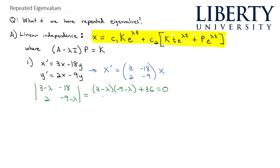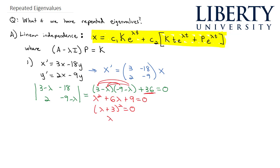Solving this equation gives us our eigenvalues. Expanding: lambda squared, then 9 lambda minus 3 lambda gives positive 6 lambda, and negative 27 plus 36 is positive 9, so lambda squared plus 6 lambda plus 9 equals zero. That factors to (lambda plus 3) squared equals zero, giving us the repeated root lambda equals negative 3.